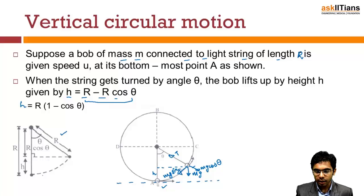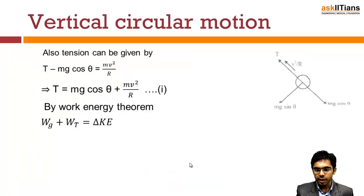As the body is moving in vertically circular motion, there must be some force towards the center which will provide the required centripetal force. Therefore, T - mg cos θ will provide the required centripetal force. So T - mg cos θ = mv²/r. Hence we can write T = mg cos θ + mv²/r. Let's take this as equation number one.